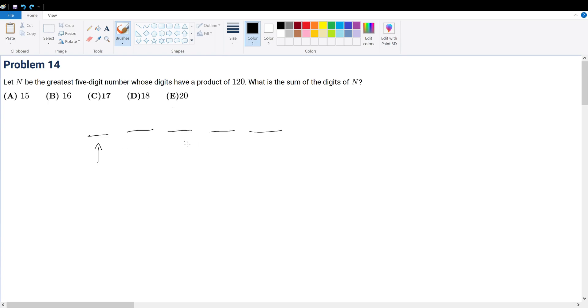First of all, we need to know the factors of 120. So 120, if you prime factorize, is 2 times 60, which is 2 squared times 30, which is 2 to the third times 15, which is 2 to the third times 3 times 5.